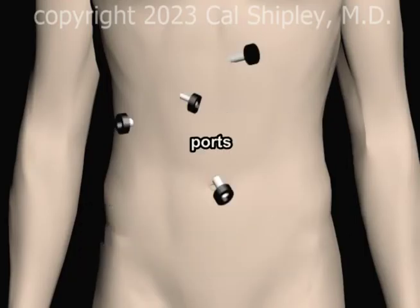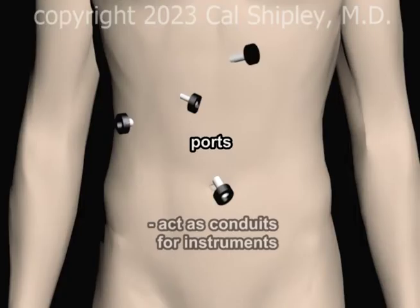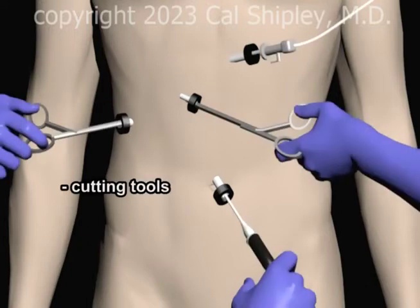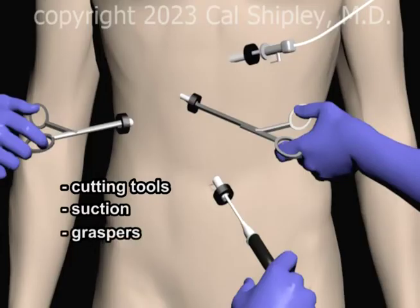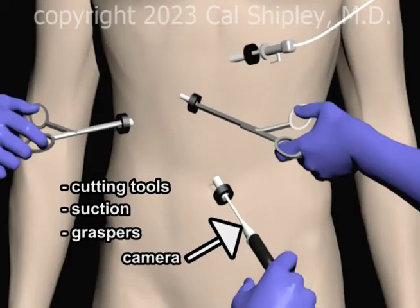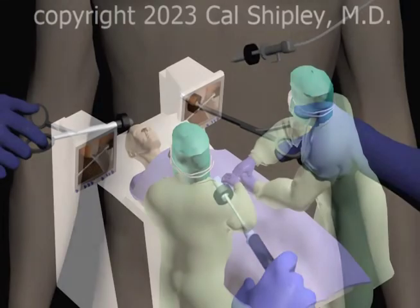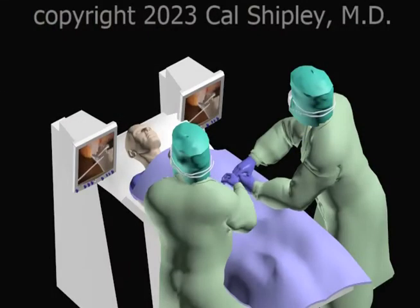Once the incisions have been made, tubular metal structures called ports are inserted. The ports act as conduits, allowing various instruments to be inserted through the abdominal wall into the area of the gallbladder. The instruments include cutting tools, suction devices to keep the surgical field clear of fluid and debris, grasping tools, and a camera — typically inserted in the port just above the umbilicus. The camera is attached to monitors in the operating room, which allows the surgeons to navigate the operative field.